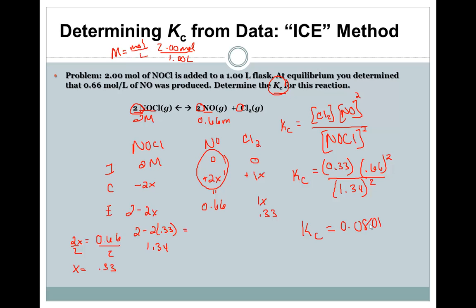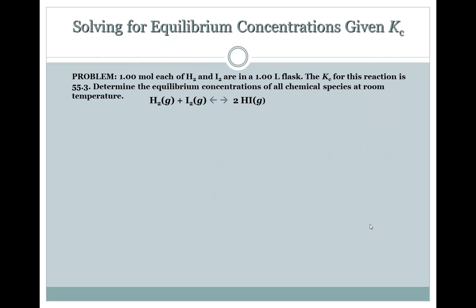First, you write down what we initially have. A must be the reactant and B is the product. At the product we have nothing at the beginning. How that's going to be changing and then what those reactions are at equilibrium.